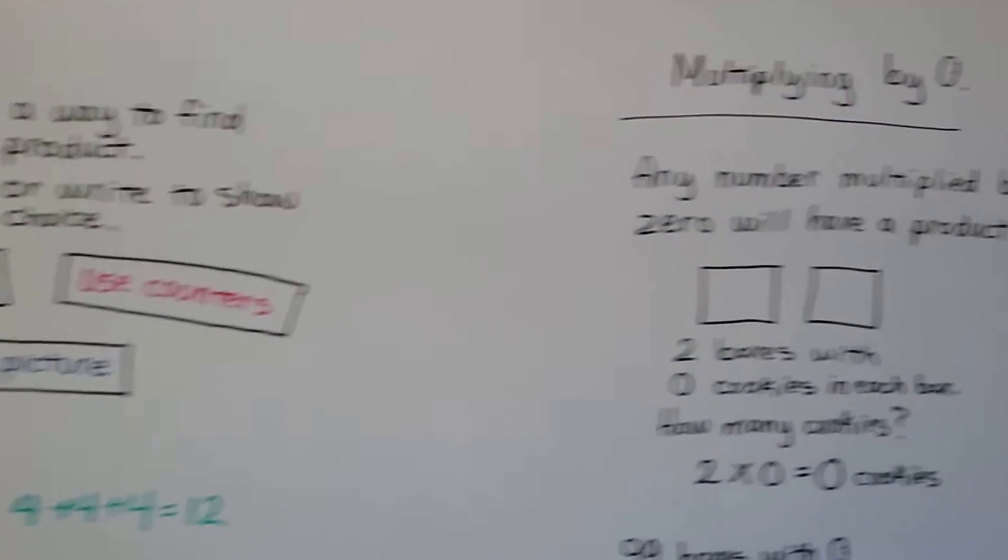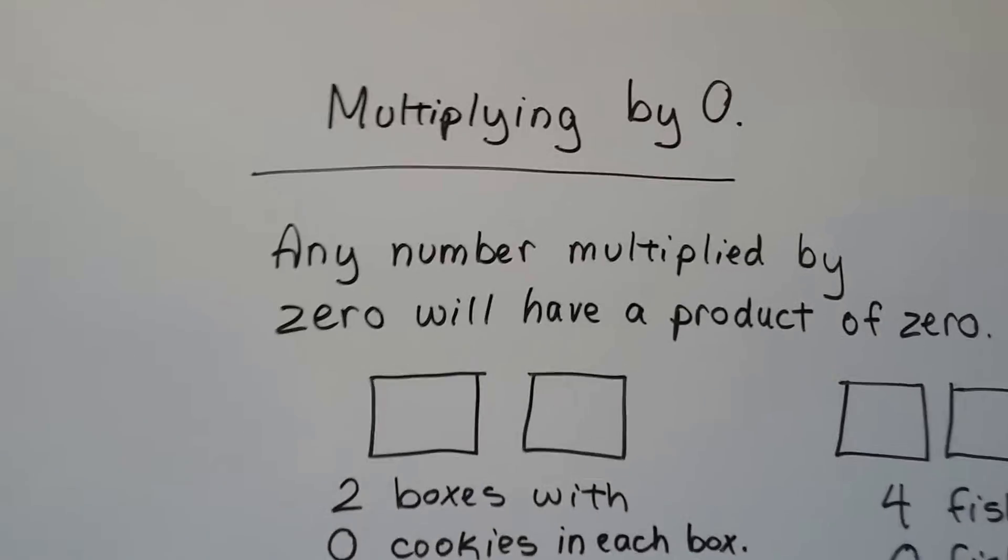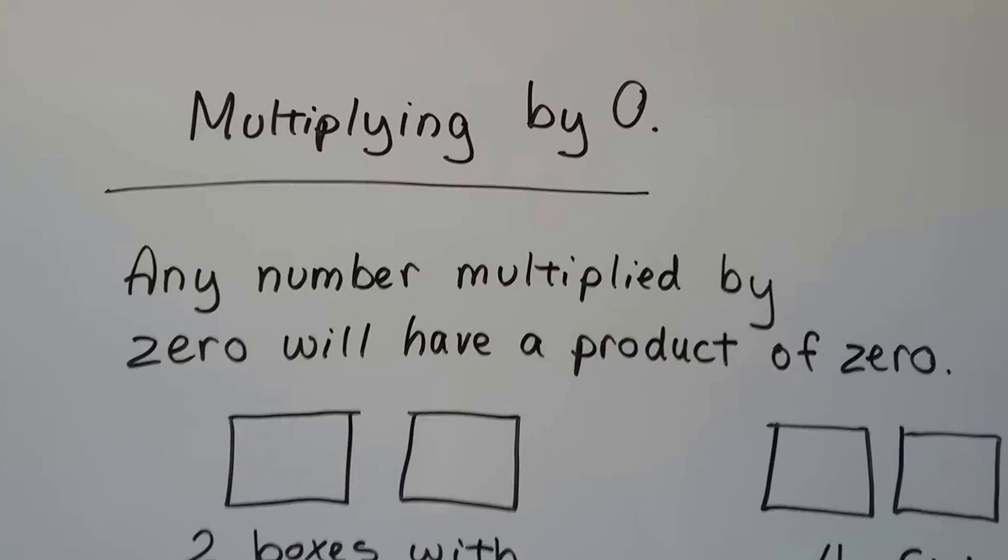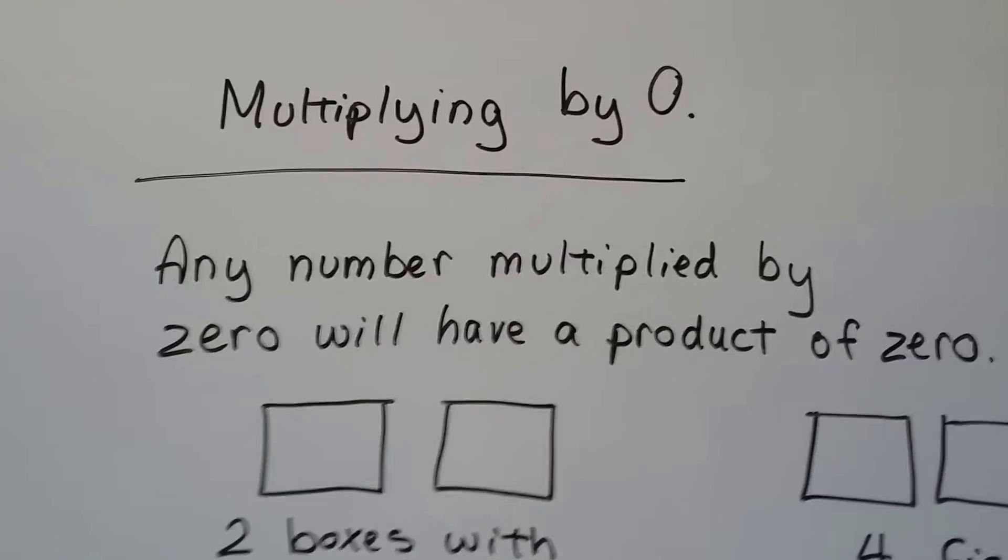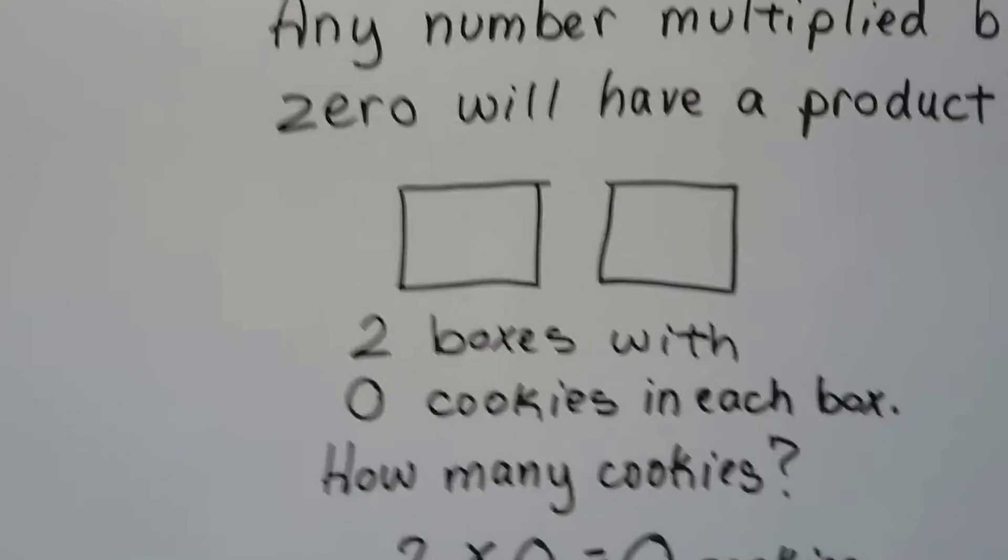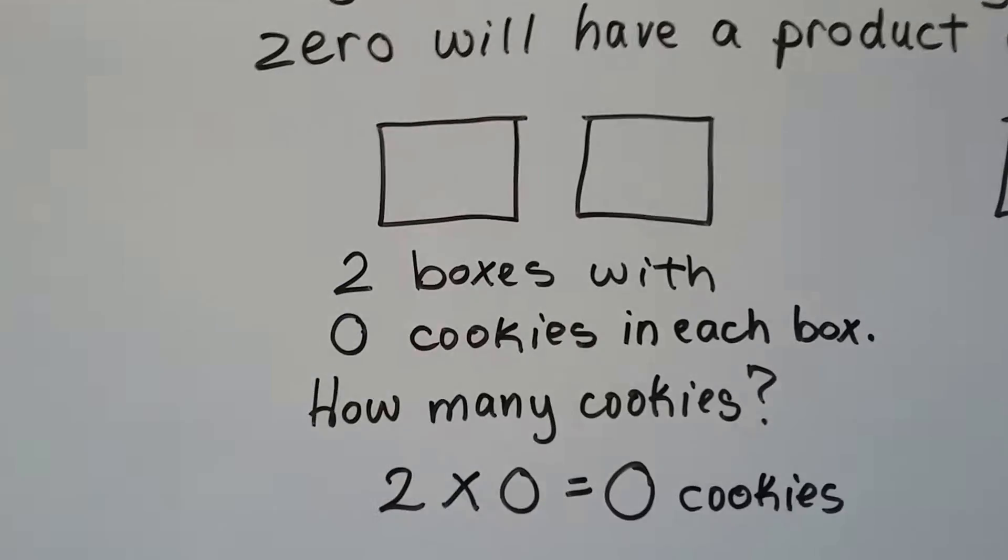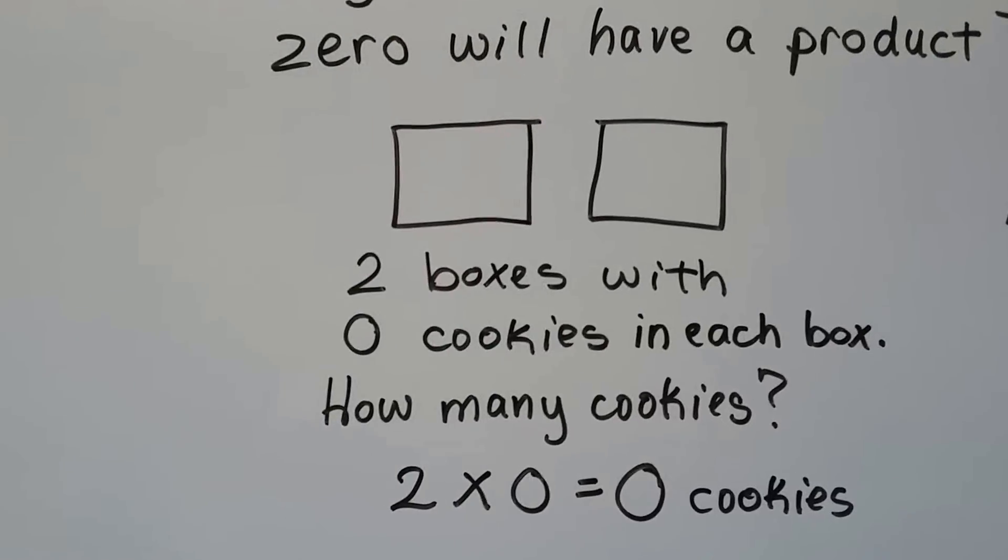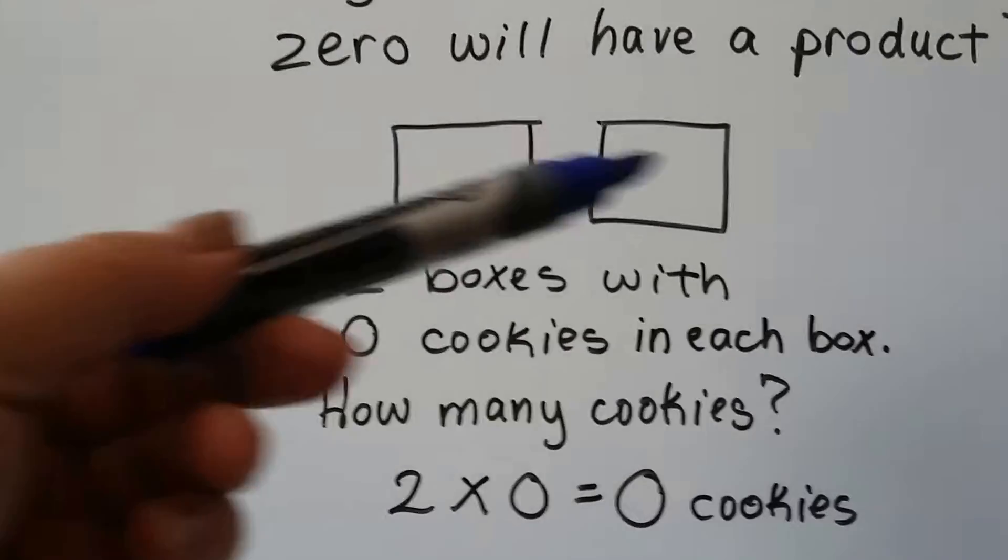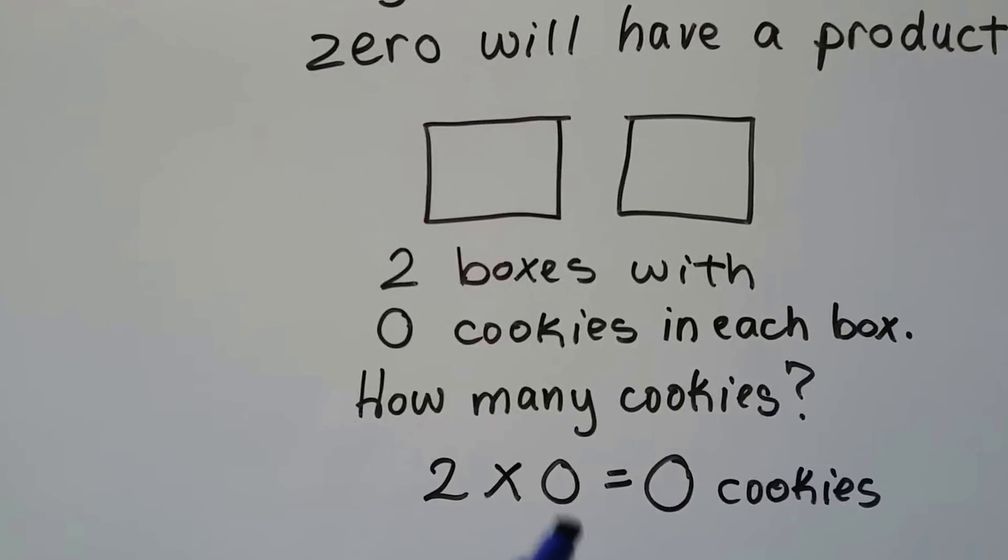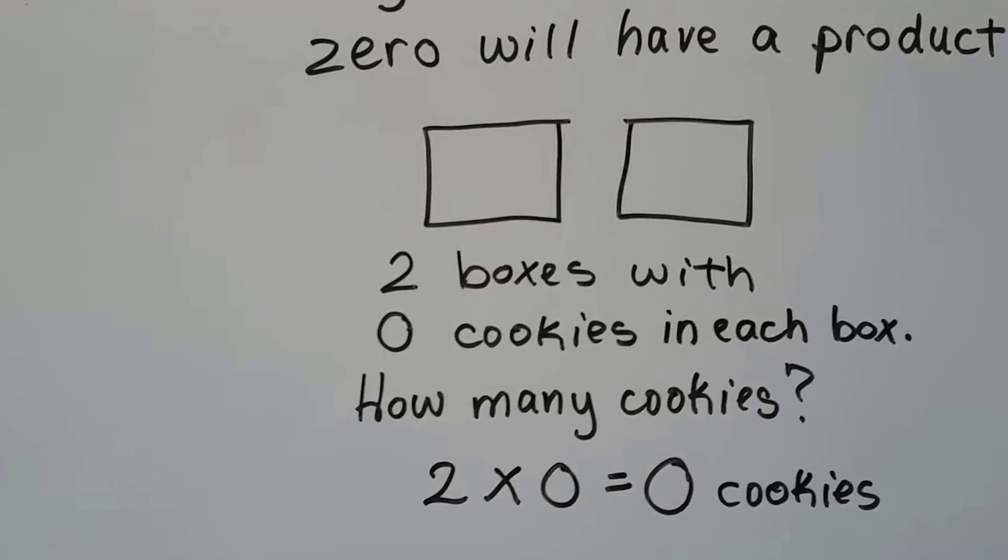Now, when we're multiplying by 0, any number that's multiplied by 0 will have a product of 0. The answer will be 0. So look at this. If we have 2 boxes, we have 2 boxes, and each box has 0 cookies in it, how many cookies do we have? Well, 0. There's no cookies in the boxes. So 2 times 0 equals 0 cookies.